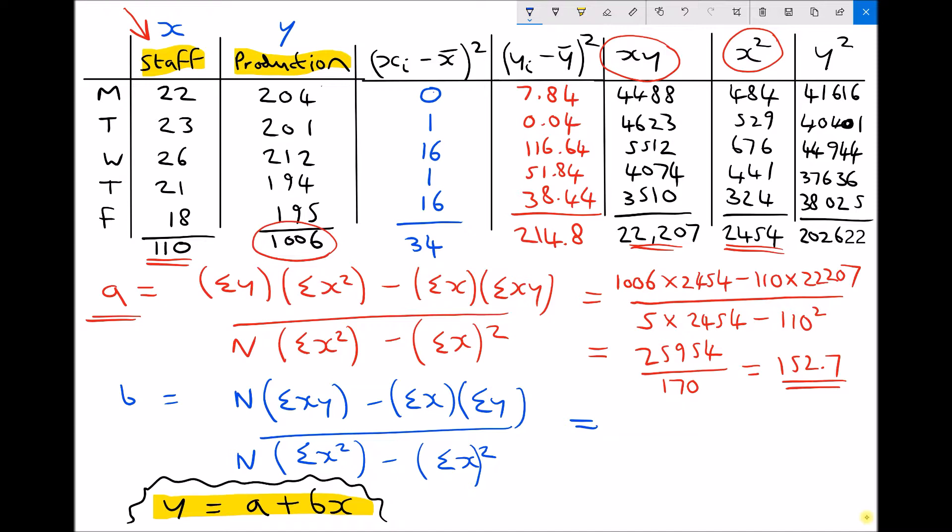At the top of our fraction, we have n, which is 5, times the sum of the xy column, which is 2207, minus the sum of the x column times the sum of the y column. The sum of x is 110 times the sum of y, which is 1006. And the bottom is 170.